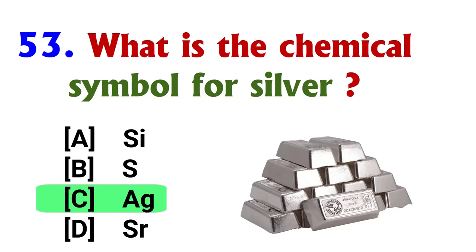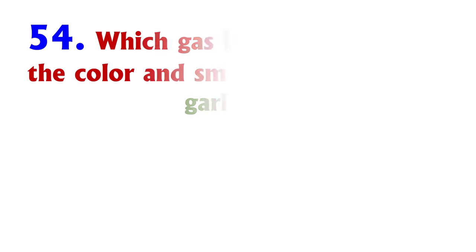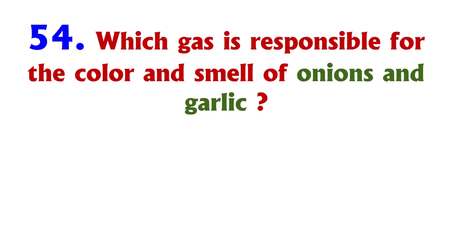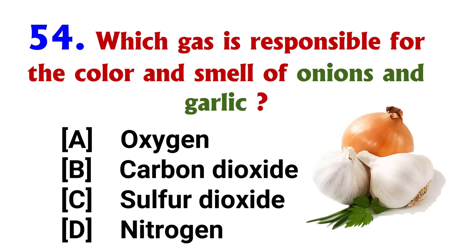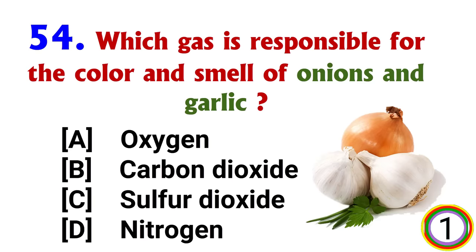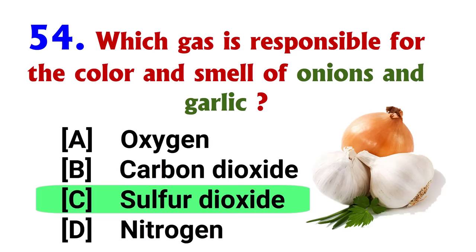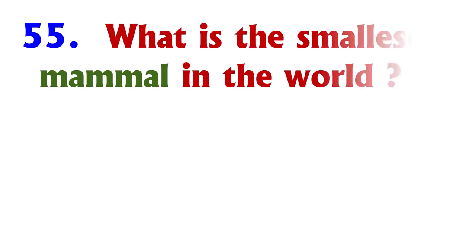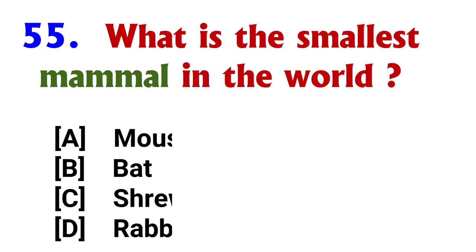What is the chemical symbol of silver? Answer: option C, Ag. Which gas is responsible for the color and smell of onions and garlic? Answer: option C, Sulfur dioxide.